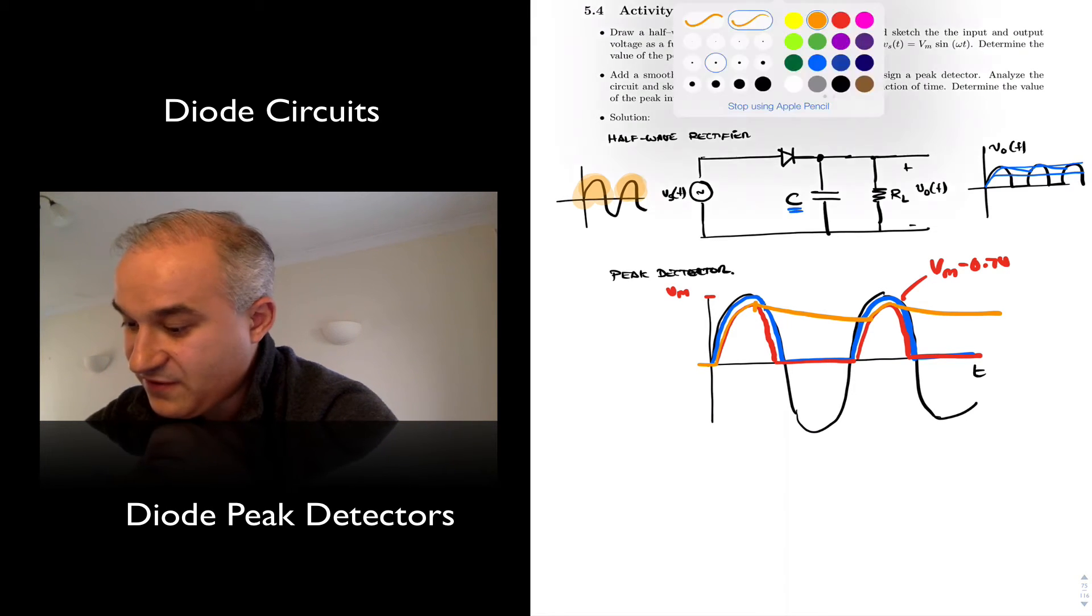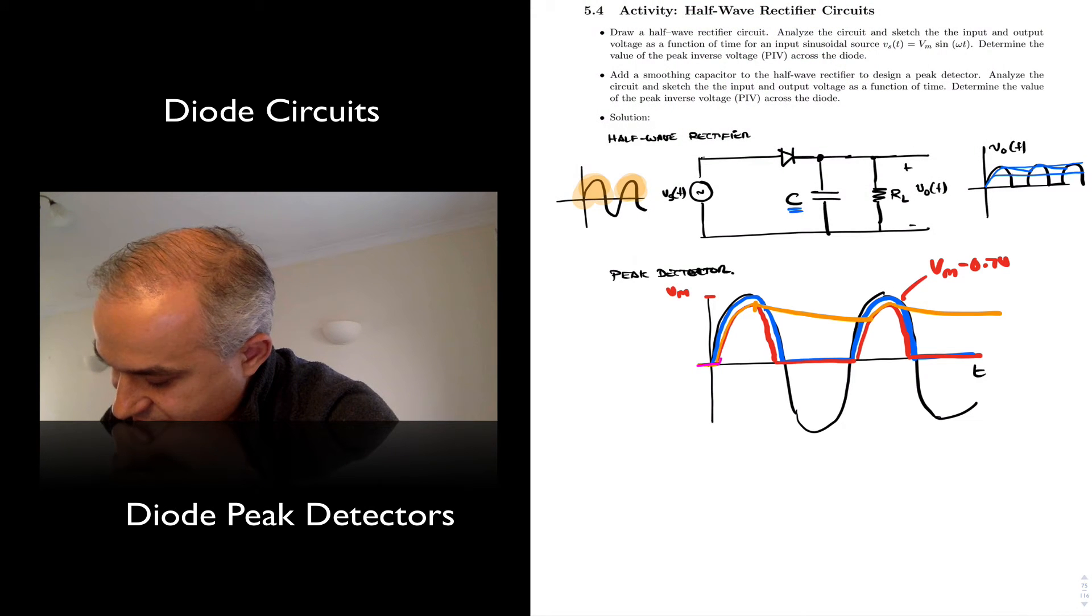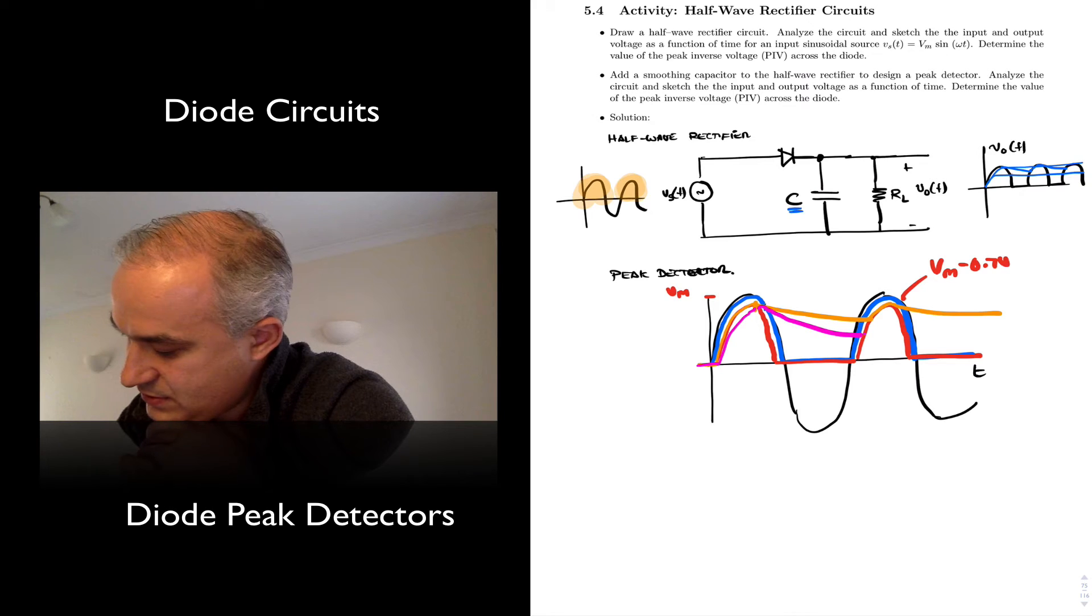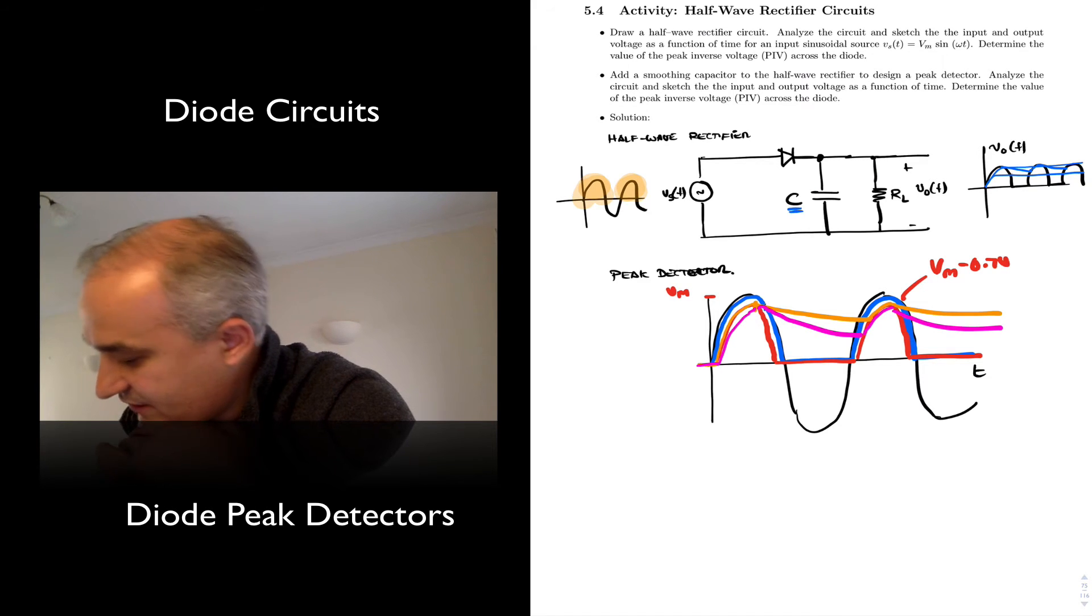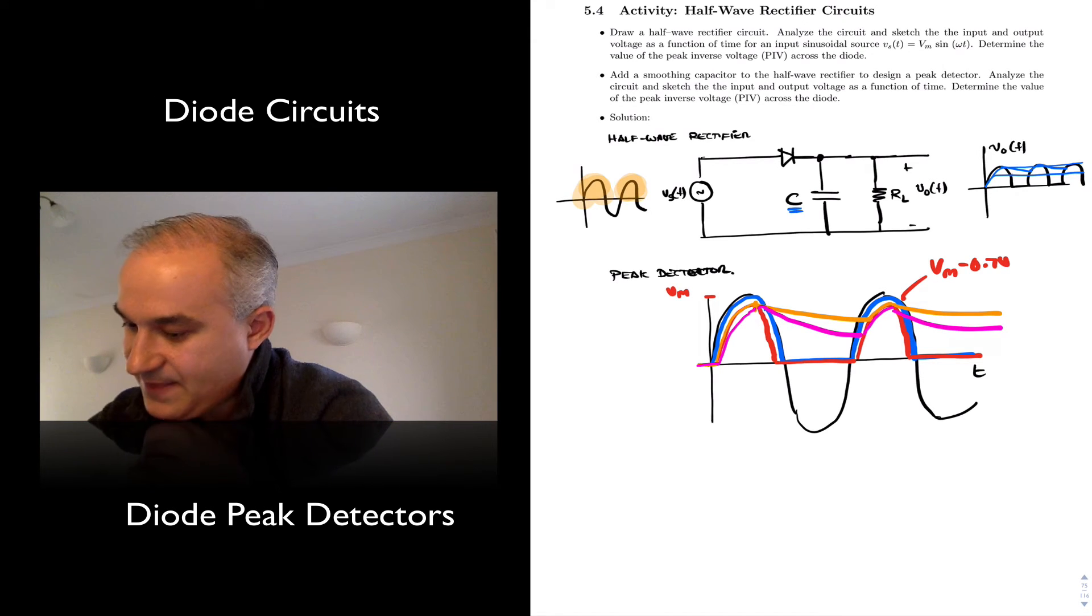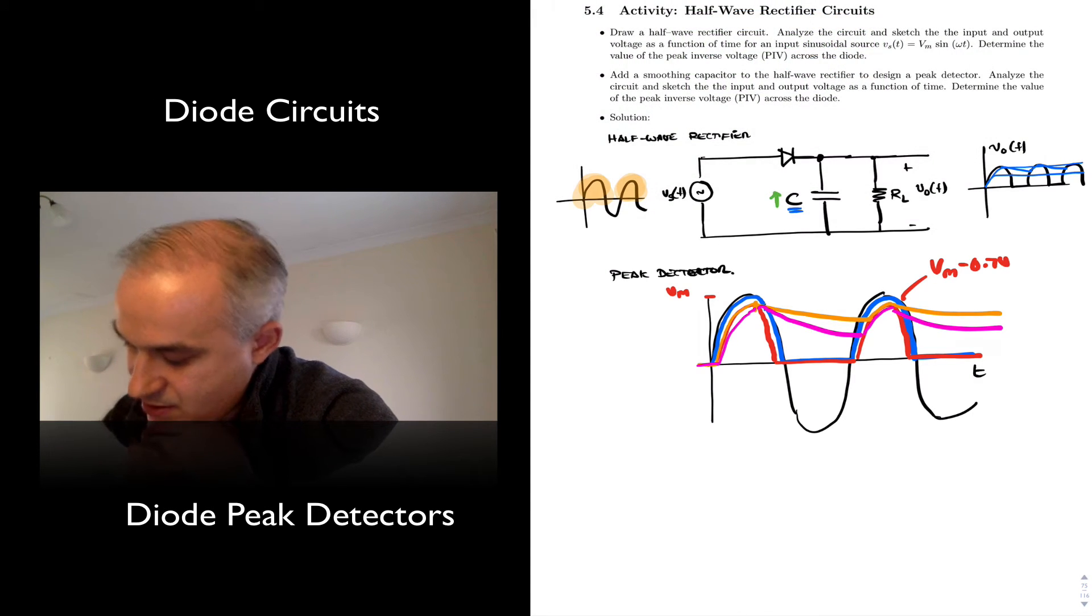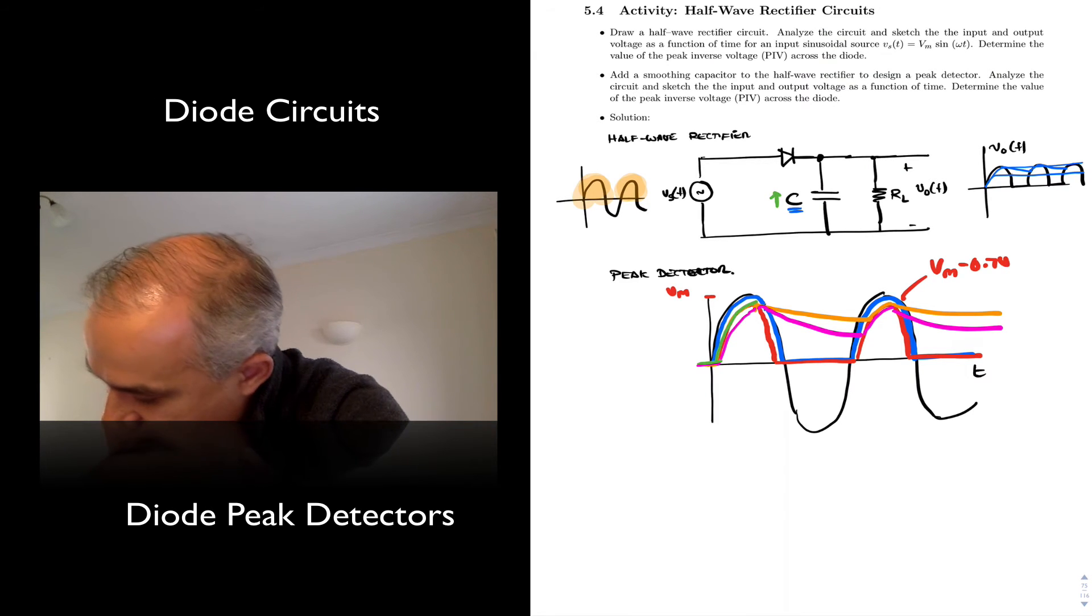Now, depending on the value of the capacitor, you may have something like that, or you may have something that looks more like this. You charge it and it discharges faster. For the smaller capacitor, you will see that behavior. As the capacitor value increases, as the capacitor goes up, you are making it stiffer, meaning you charge it and you keep it for longer.